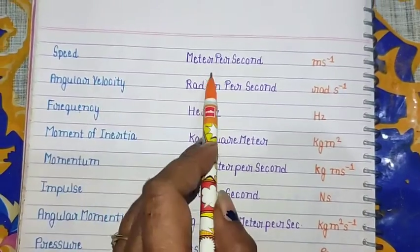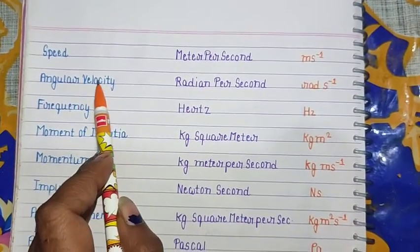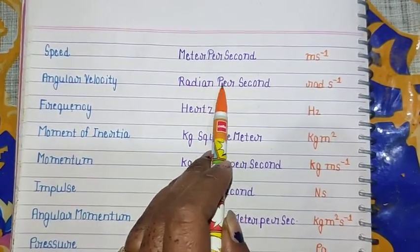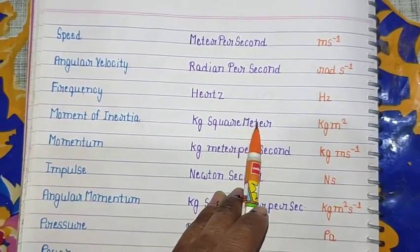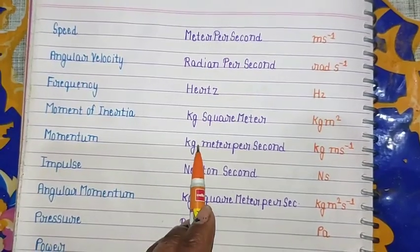Speed - meter per second (m/s). Angular velocity - radian per second (rad/s). Frequency - Hertz (Hz). Moment of inertia - kilogram square meter (kg·m²). Momentum - kilogram meter per second (kg·m/s).